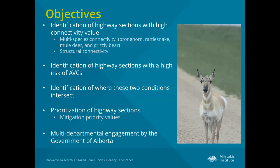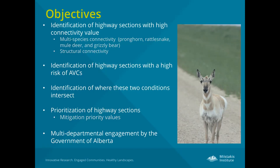One objective was to identify highway sections with high connectivity value using a multi-species approach with four focal species: pronghorn, rattlesnake, mule deer, and grizzly bear. We predominantly used existing data for these species to develop functional connectivity models, and also developed a species-neutral structural connectivity model for the study area. We were also interested in identifying highway sections with high risk of animal-vehicle collisions, using RCMP collision data and provincial data — traditionally used by transportation agencies to identify hotspots.